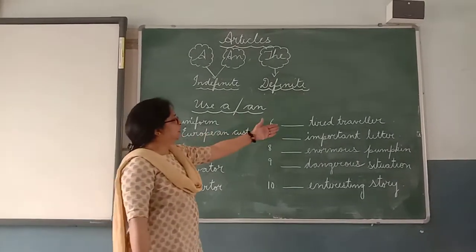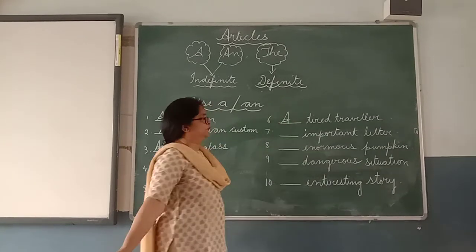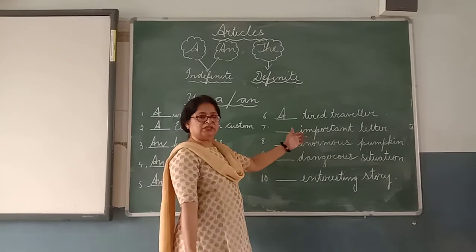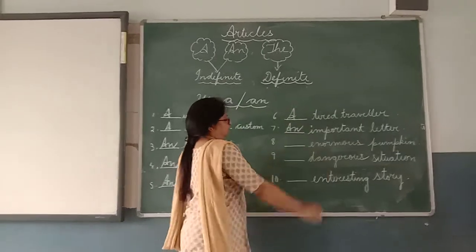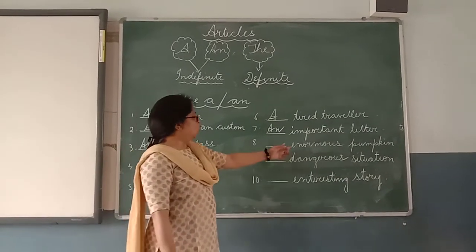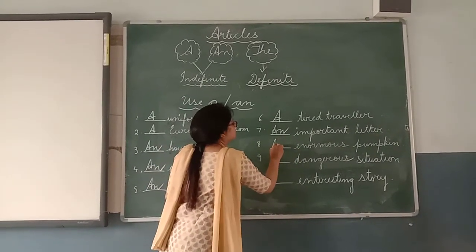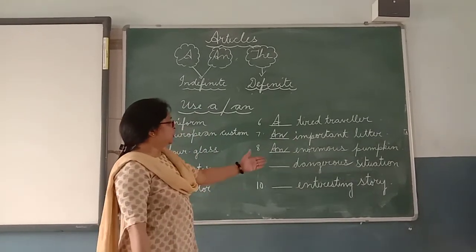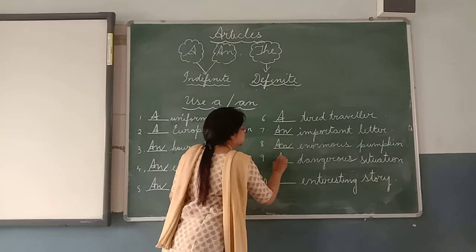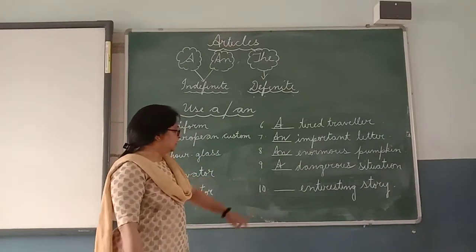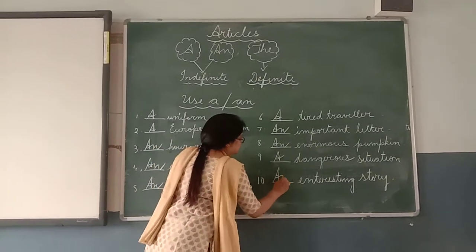Number six: 'tired traveller' — it starts with a consonant sound, so 'a tired traveller'. Number seven: 'important letter' — it starts with a vowel sound, so 'an important letter'. Number eight: 'enormous pumpkin' — it starts with a vowel sound, so 'an enormous pumpkin'. Number nine: 'dangerous situation' — it starts with a consonant sound, so 'a dangerous situation'. Number ten: 'interesting story' — it starts with a vowel sound, so 'an interesting story'.